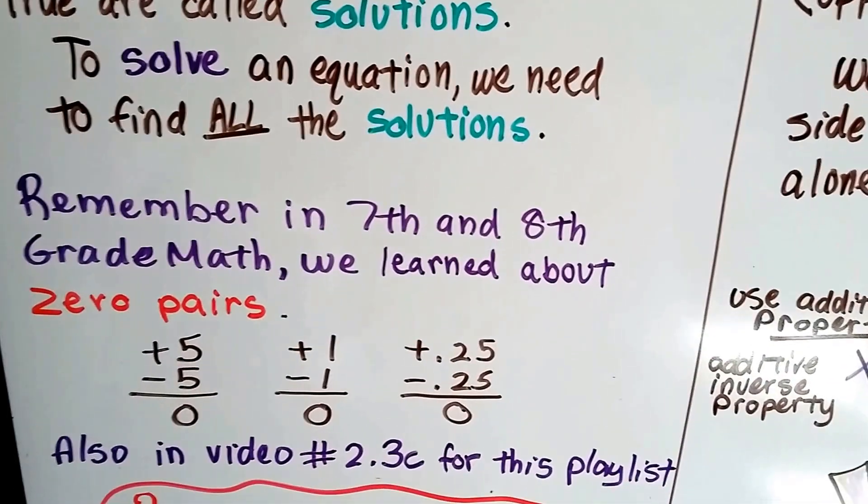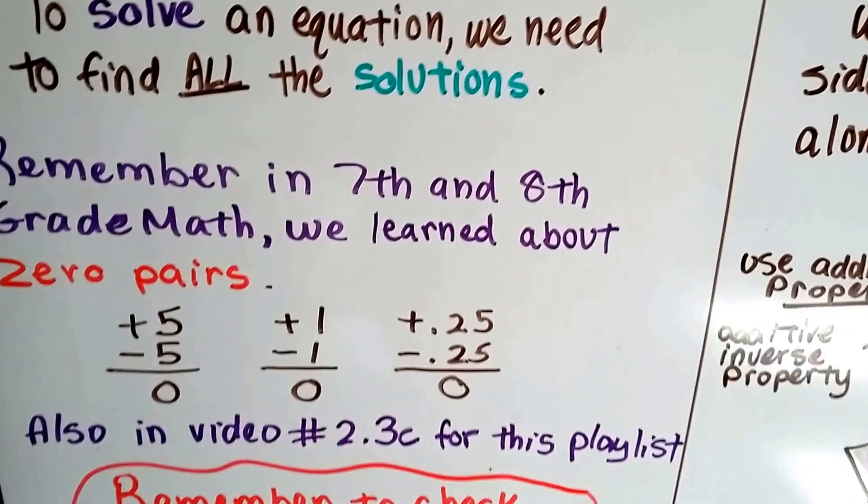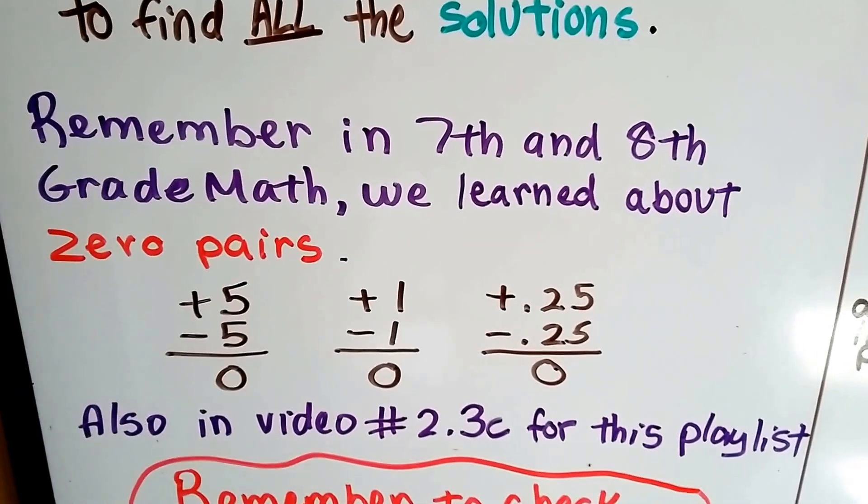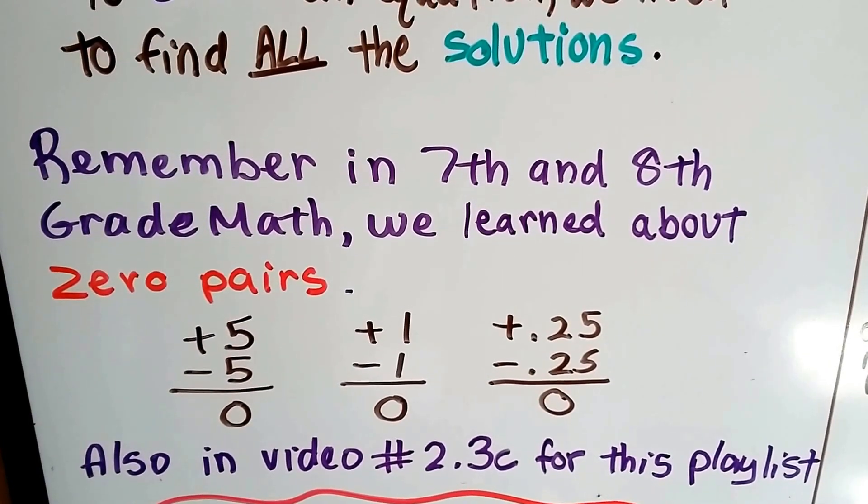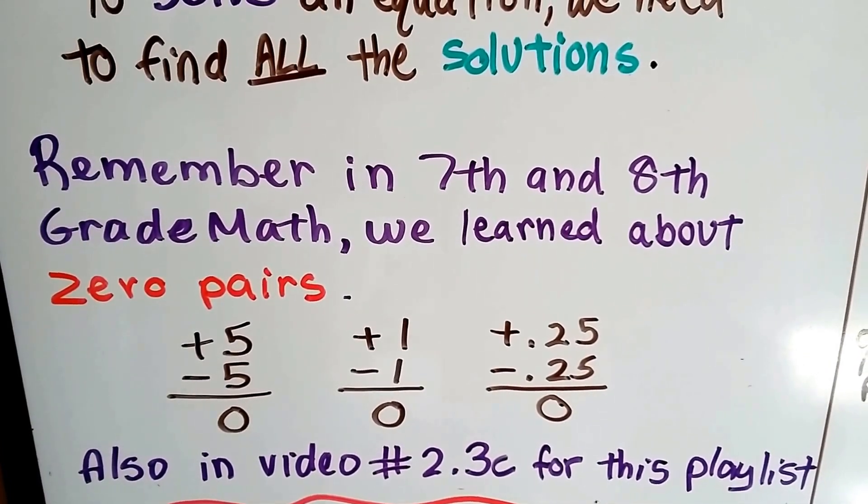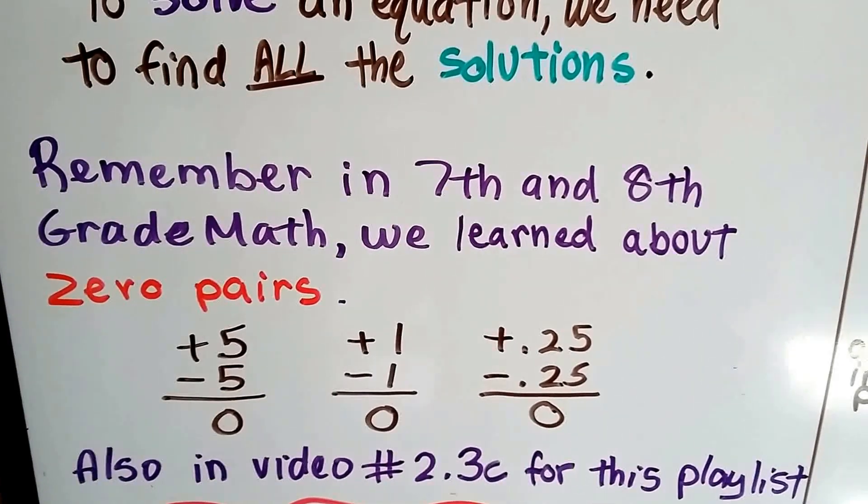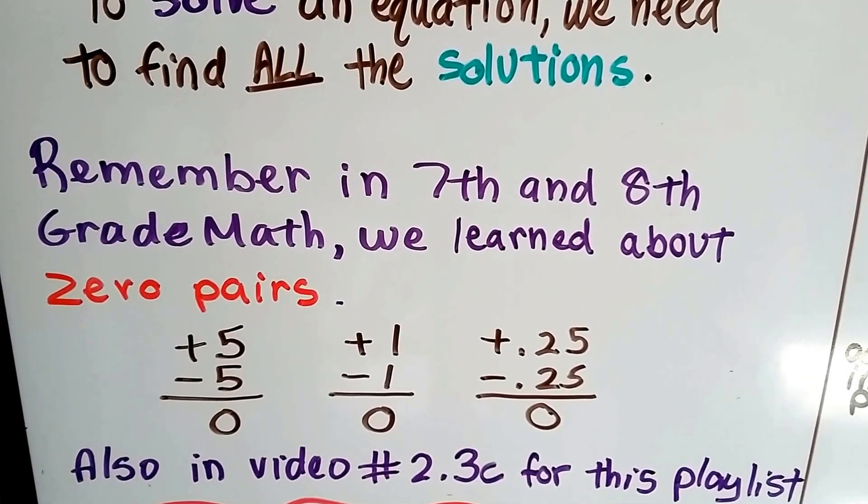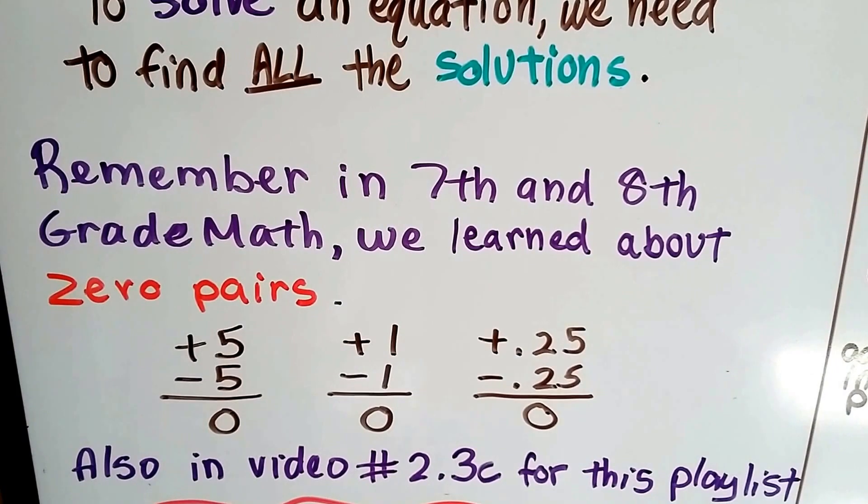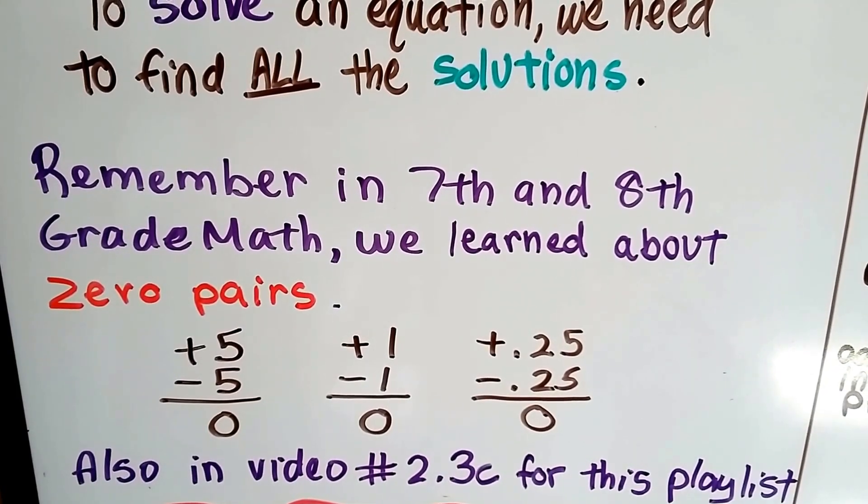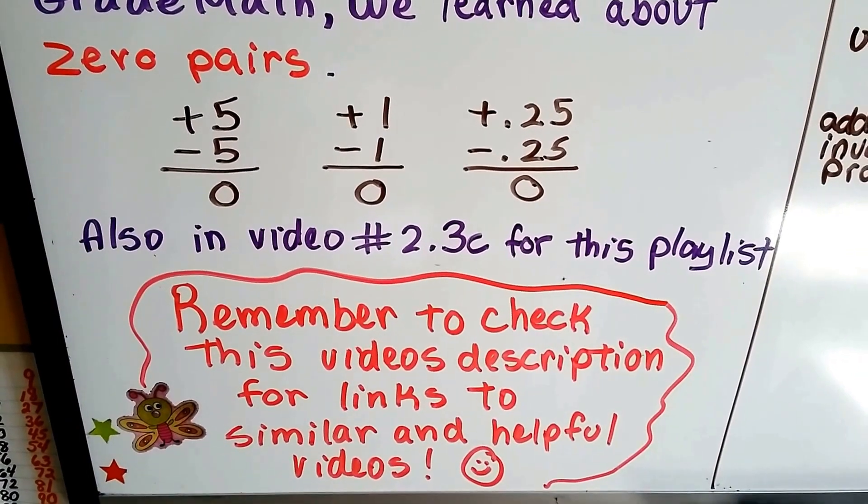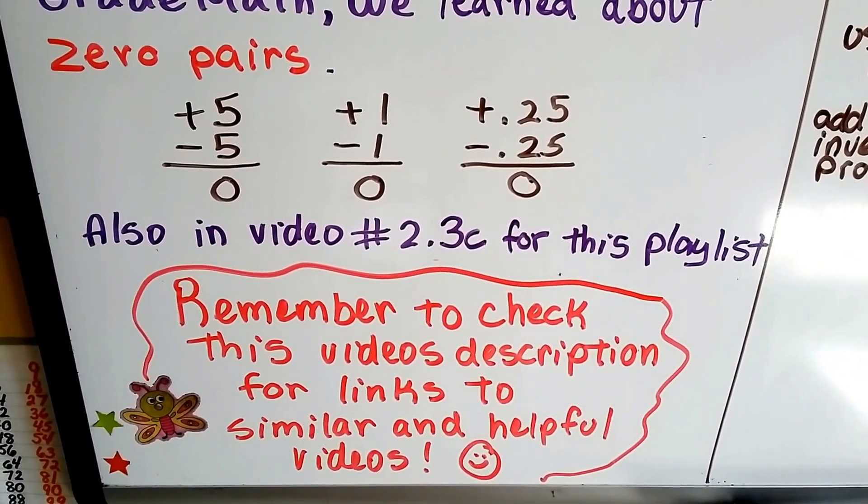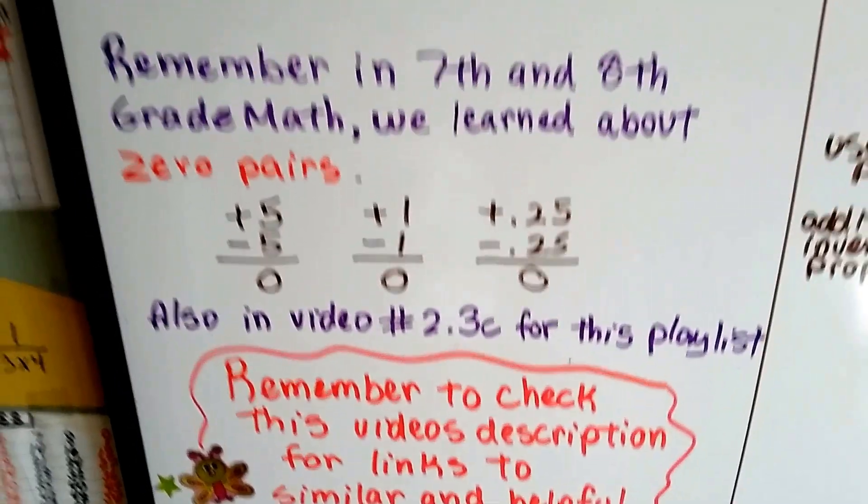Remember in 7th and 8th grade math, we learned about zero pairs. If we have a positive 5 and we take away 5, it's going to give us zero. If we have a positive 1 and we add a negative 1, that's going to be a zero. Or even with decimals, 0.25 take away 0.25 is a zero. We also covered this in video 2.3c in this Algebra 1 playlist. So if you're getting lost, just remember to check this video's description for links to similar and helpful videos.